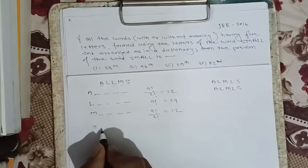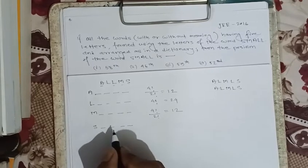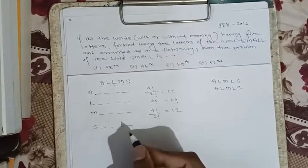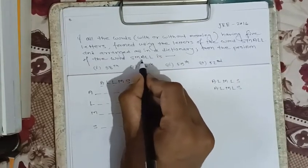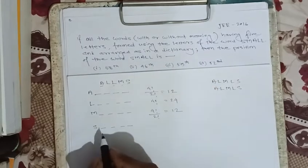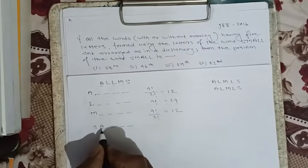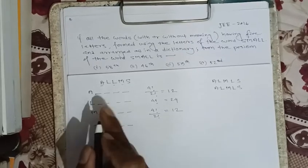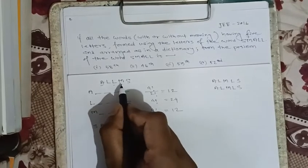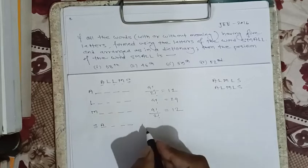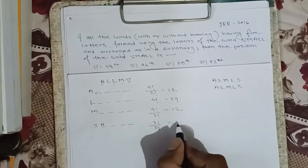Now, starting with 's': we notice we need to find the position of SMALL, which is s, m, a, l, l. We fix 's' and then in dictionary order 'a' comes first. So we fix 's' and 'a', and arrange the remaining 3 letters in 3 factorial by 2 factorial ways, because of the two l's. This gives 3!/2! = 3 words.